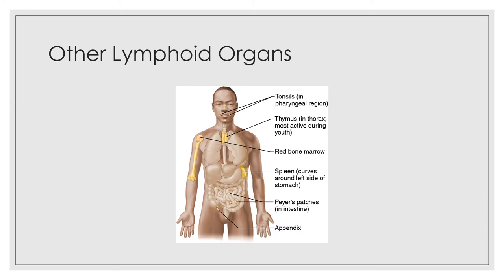Instead of filtering lymph, the spleen filters and cleanses blood of bacteria, viruses, and other debris. Like other lymphoid organs, the spleen provides a site for lymphocyte proliferation and immune surveillance. Its most important function is to destroy worn-out red blood cells and return their breakdown products to the liver. Other functions include storing platelets and acting as a blood reservoir. During hemorrhage, both the spleen and liver contract and empty their blood into the circulation to help bring blood volume back to normal. In the fetus the spleen is an important hematopoietic site, but the adult spleen produces only lymphocytes.